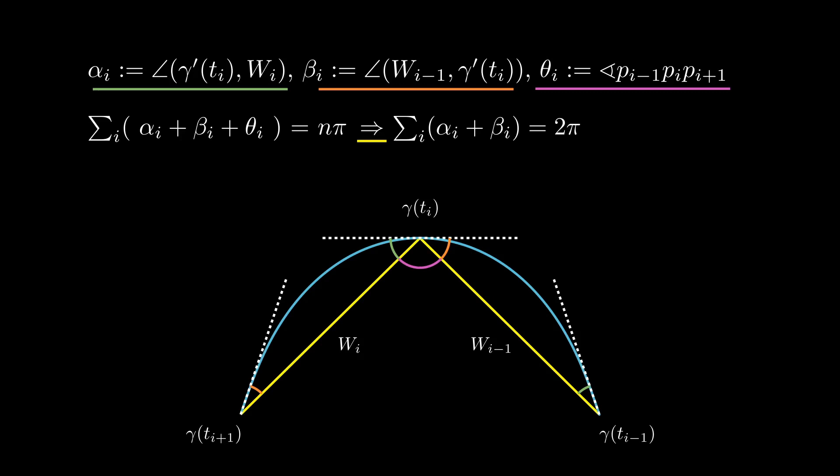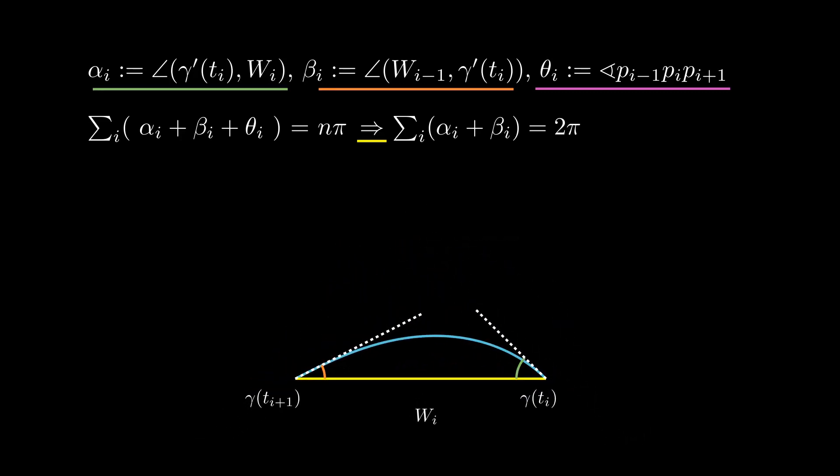We now focus on a single piece, and observe that α_i + β_{i+1} is the angle from γ'(t_i) to w_i and then to γ'(t_{i+1}).